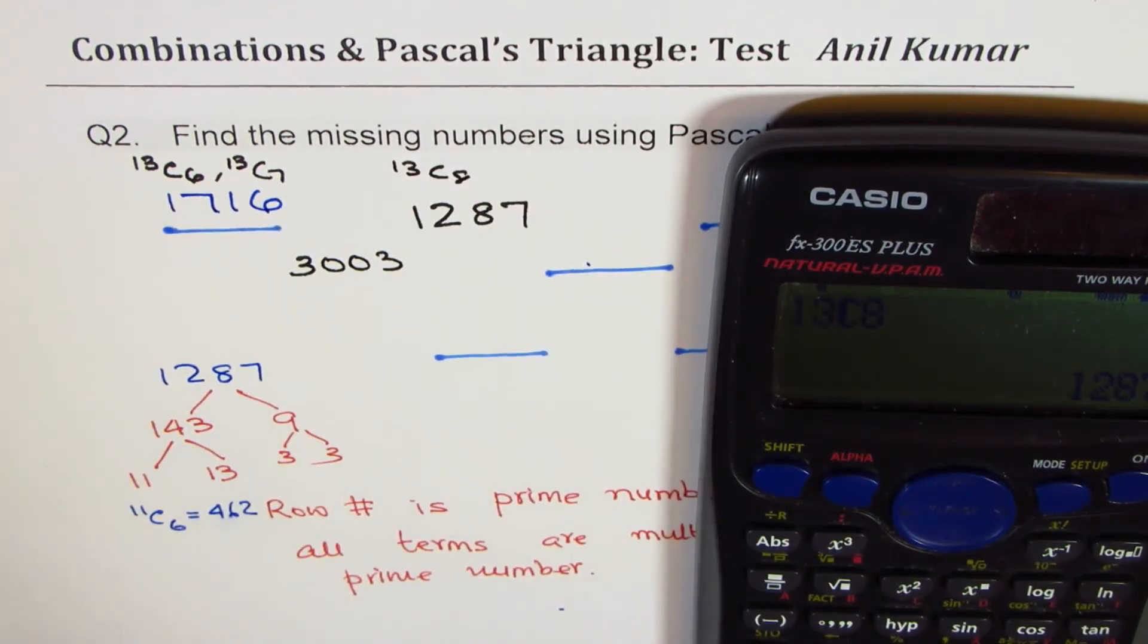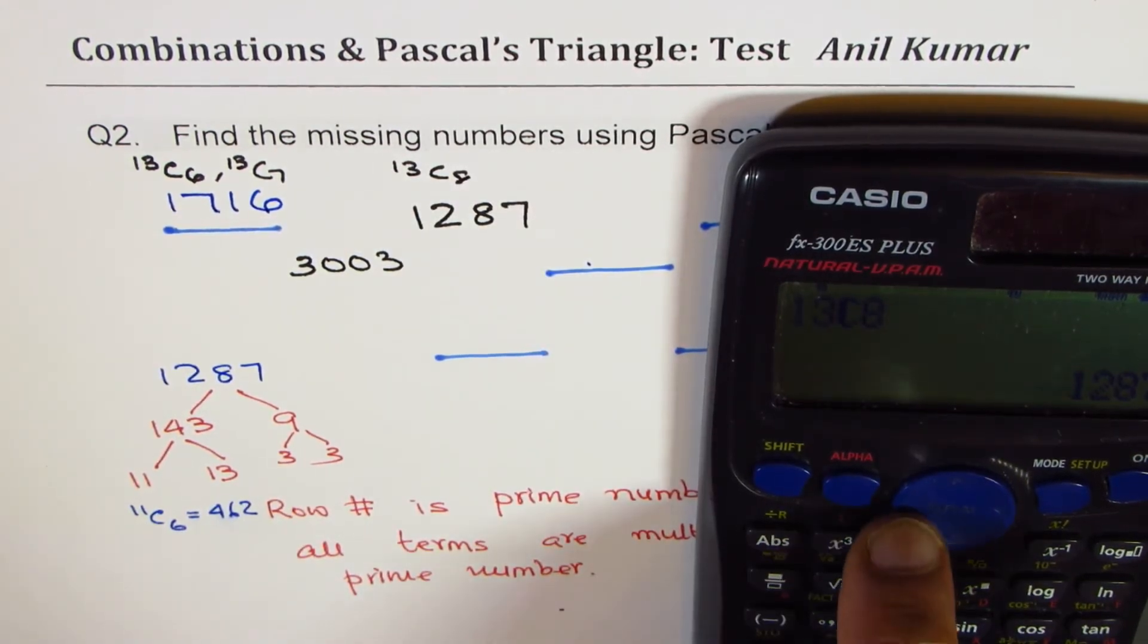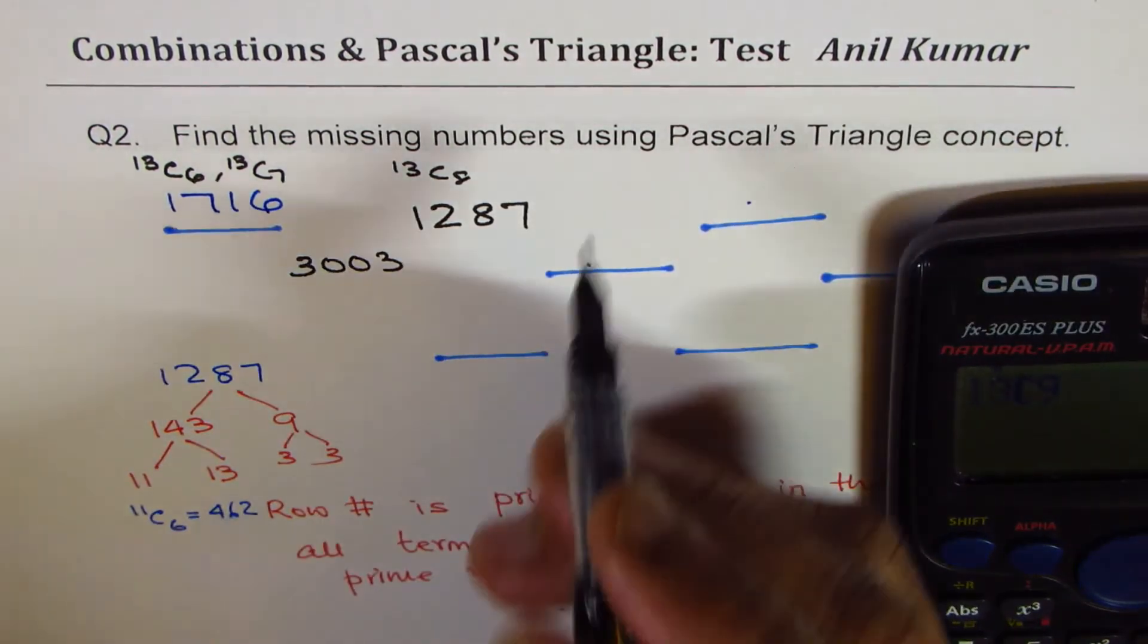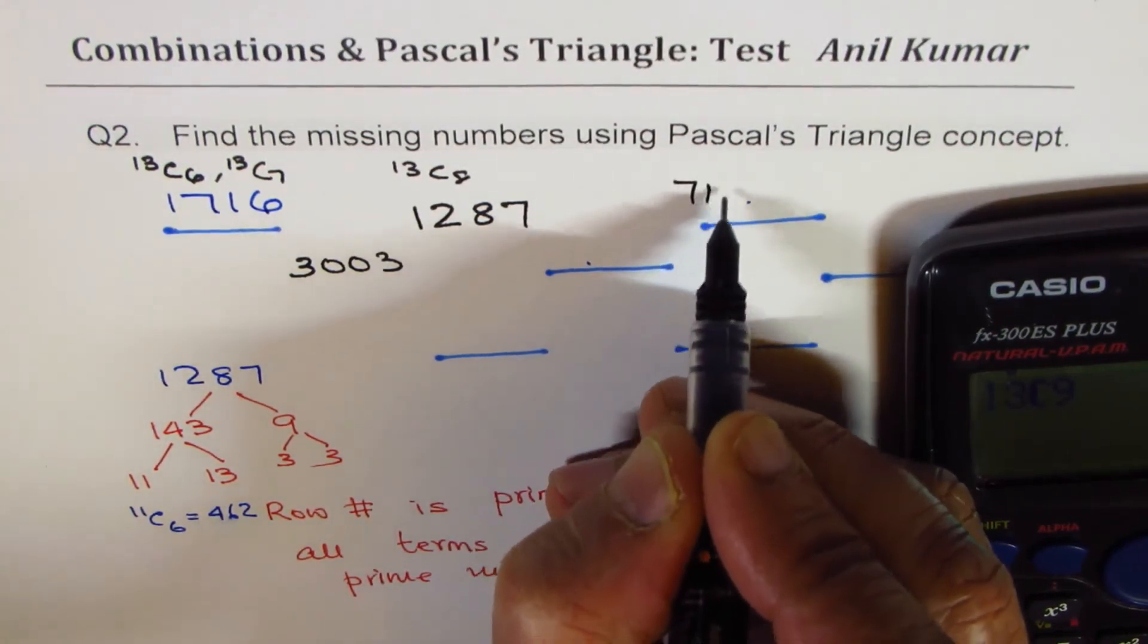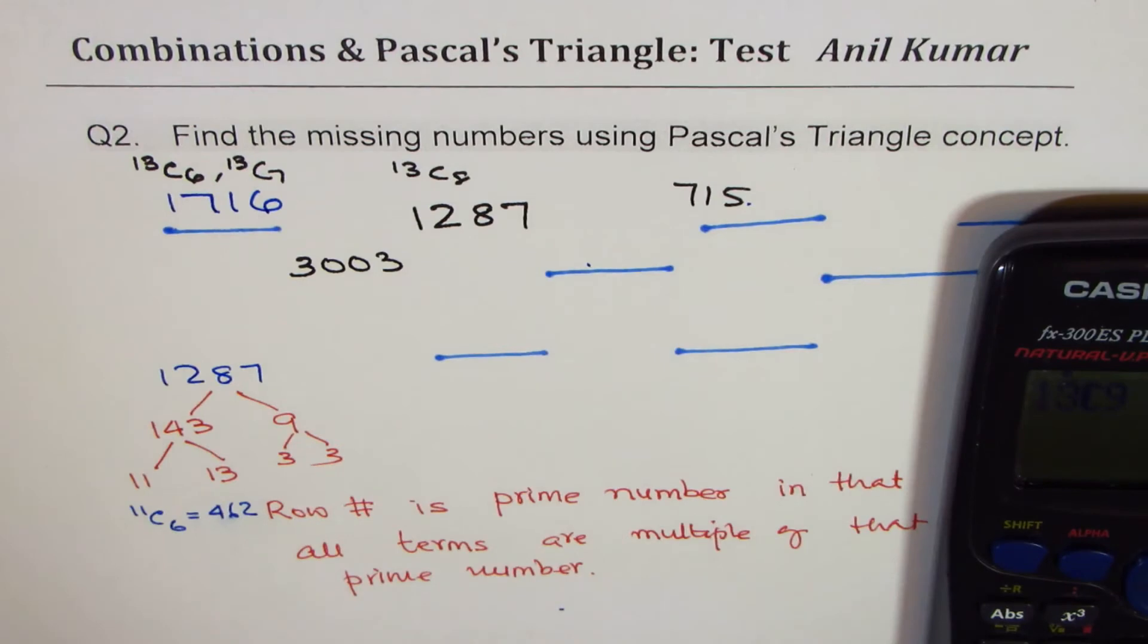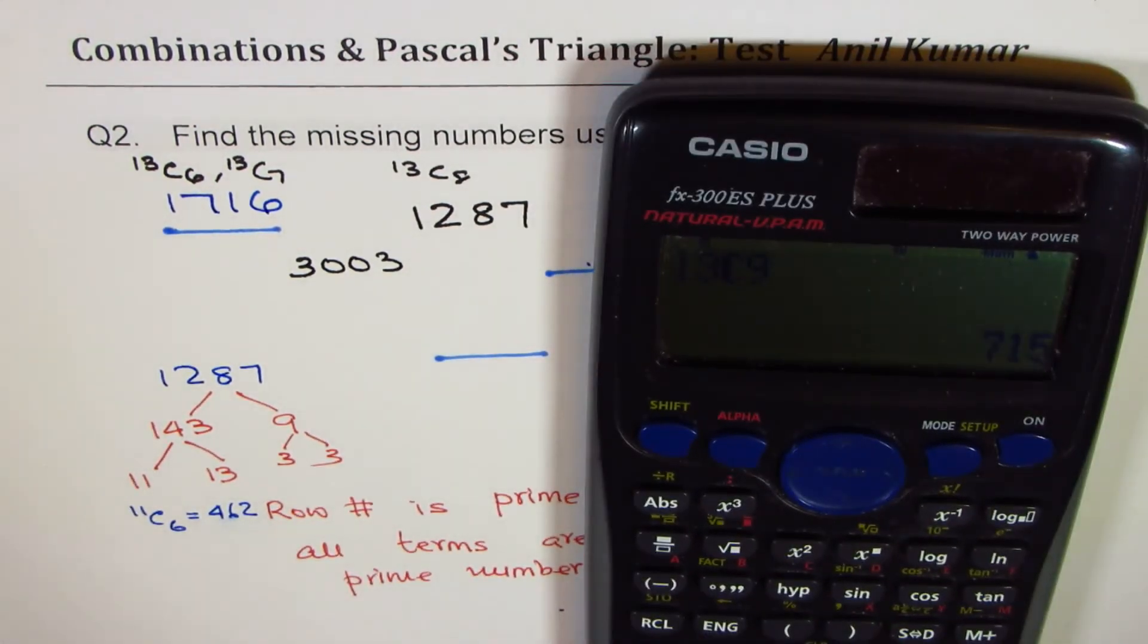Now once you get one number it's very easy. So the next number in the series is 13C9. So 715. So we get the next number as 715. And actually we can do this combination. But the whole idea is to understand this trick.